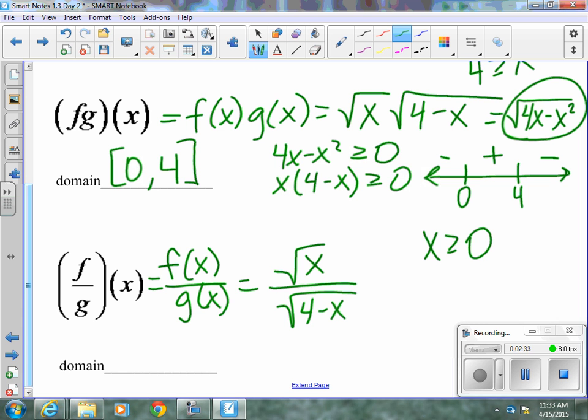The bottom, or the denominator, tells us that 4 minus x in the radical would have to be greater than or equal to 0, but because it is in the denominator, it cannot be equal. So it's just greater than 0.